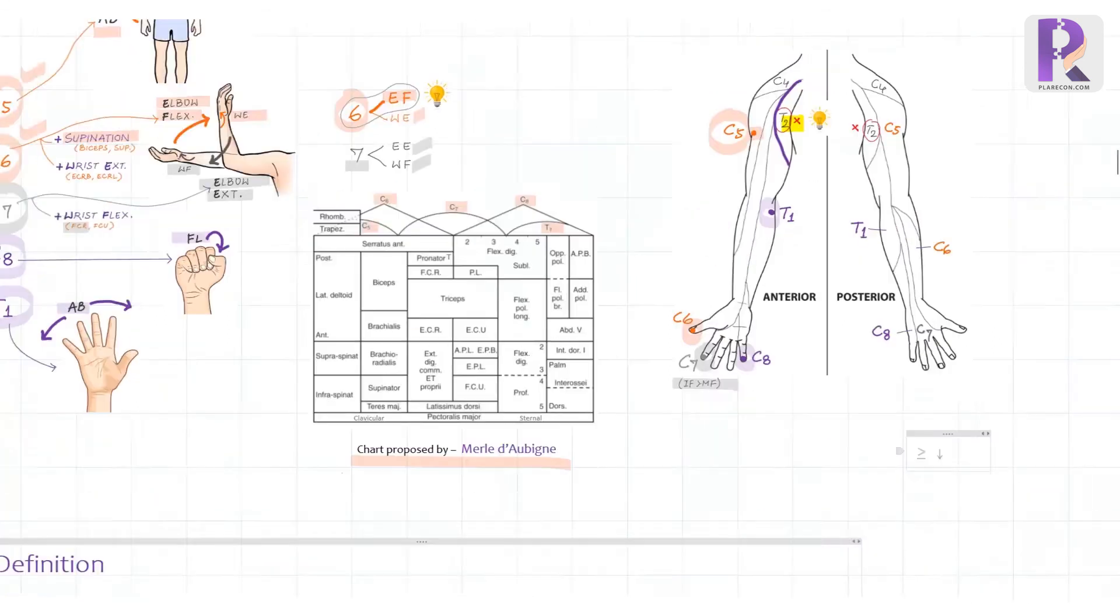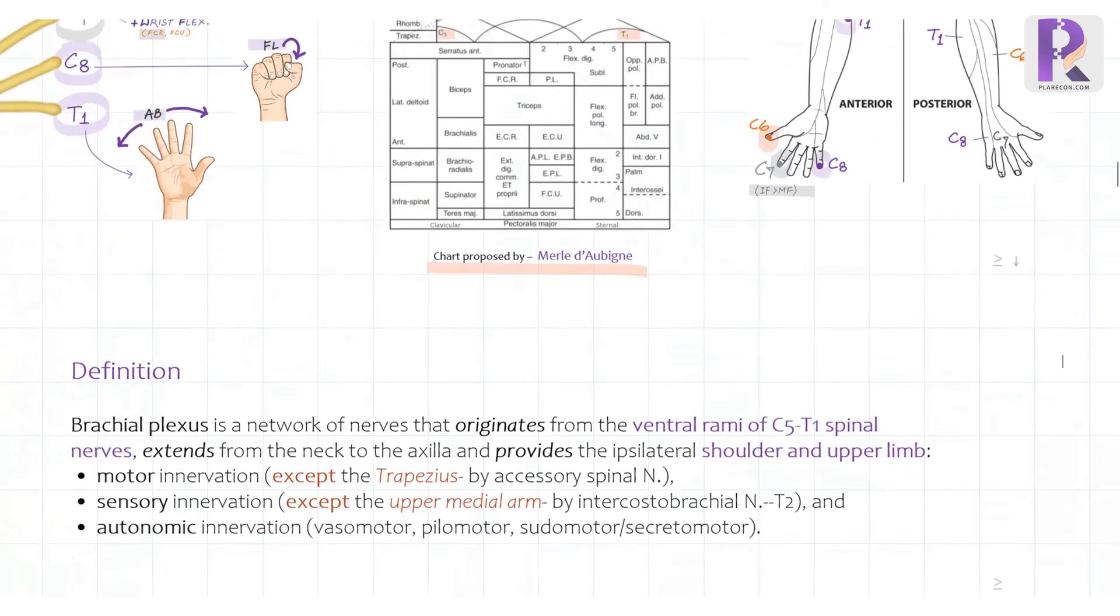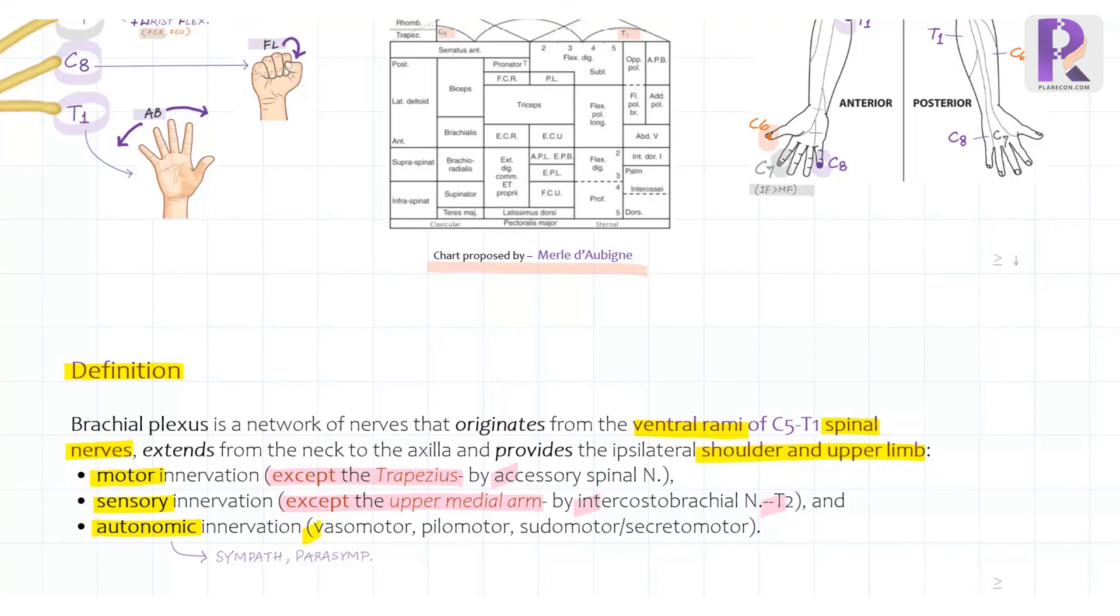So now, we are in a really good position to define the brachial plexus, which is a network of nerves that originates from the ventral rami of C5 to T1 spinal nerves, extends from the neck to the axilla and provides the ipsilateral shoulder and upper limb. Motor innervation, except the trapezius, which is supplied by accessory spinal nerve. The sensory innervation, except the upper medial arm, which is supplied by the intercostobrachial nerve, that is T2, and autonomic innervation, mainly sympathetic, which is vasomotor, pilomotor, and secretomotor.